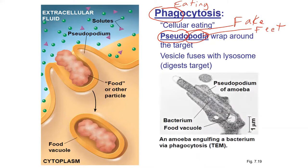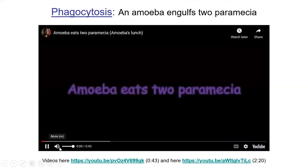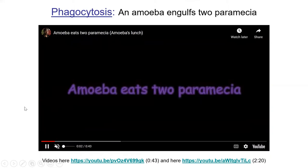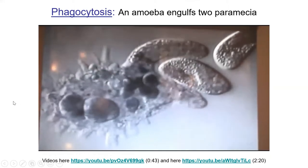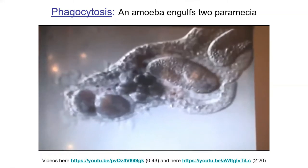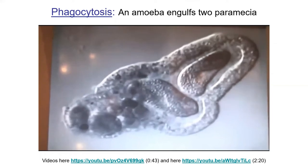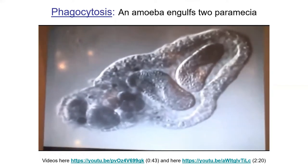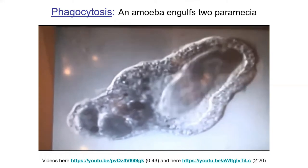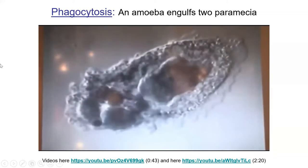Here's an electron micrograph of an amoeba eating a bacterium. In the video, you can see the amoeba is a unicellular organism that eats things by phagocytosis — it changes the shape of its entire membrane. They're a little bit slower than shown here, but in this case it has consumed two paramecium. The paramecium are not much smaller than the amoeba; they're trying to get out, but I don't think they're going to make it.